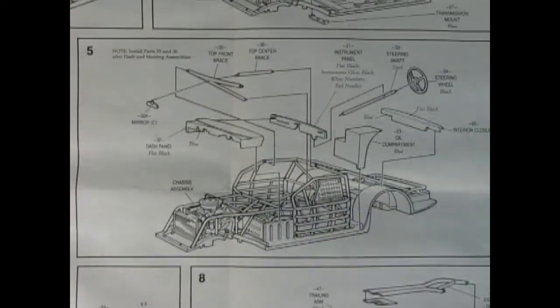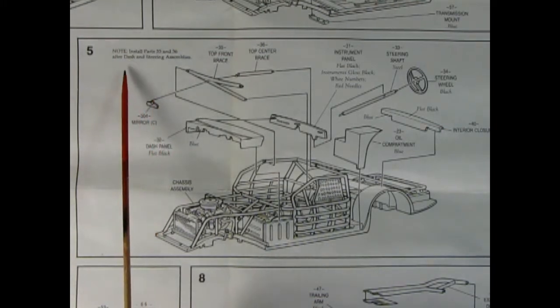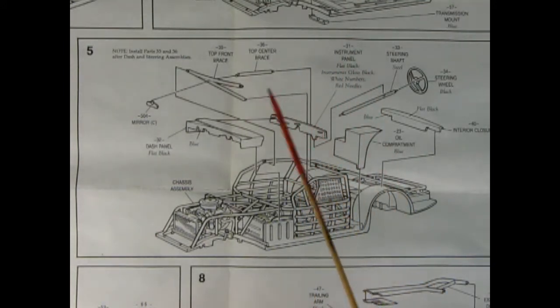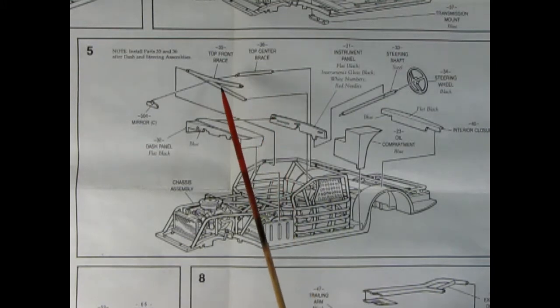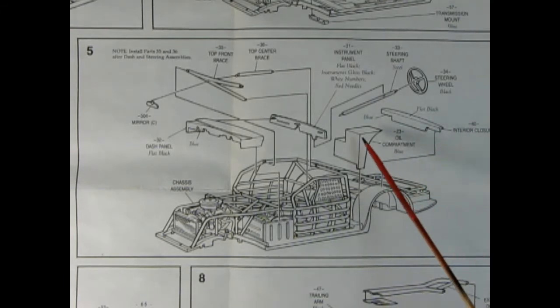In panel five we've got this note that says to install parts 34 and 36 after dash and steering assemblies. I can see why because that goes up on the top here - there's a top center brace and a top front brace. We've got this chrome mirror, our dashboard panel, the dashboard and instrument panel itself, steering shaft and steering wheel, interior closure and oil compartment. All the paint colors are being pointed to right on the parts here. This is going to look really cool once it gets all together.